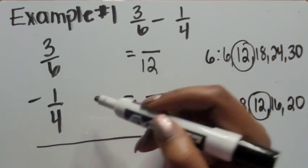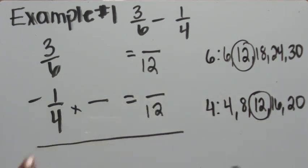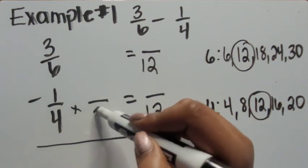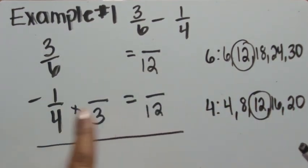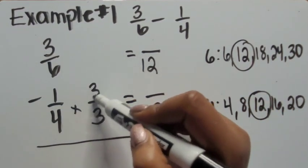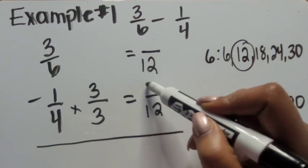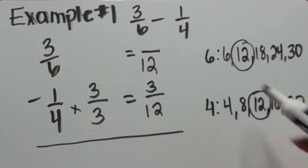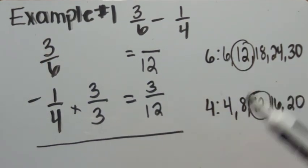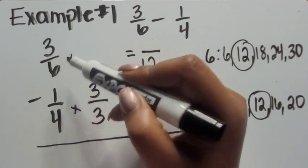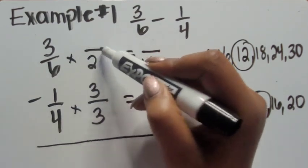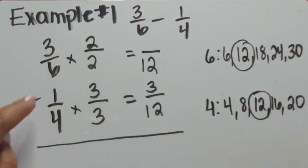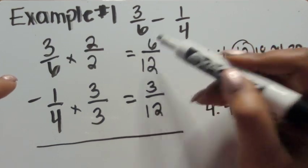What would the equivalent fraction be with a denominator of twelve? Four times what equals twelve? Looking at our multiples of four: one, two, three groups of four equals twelve. So what would three groups of one be? It would equal three. Now let's do the same thing for three-sixths. We see that two groups of six equals twelve, so the six was multiplied by two.